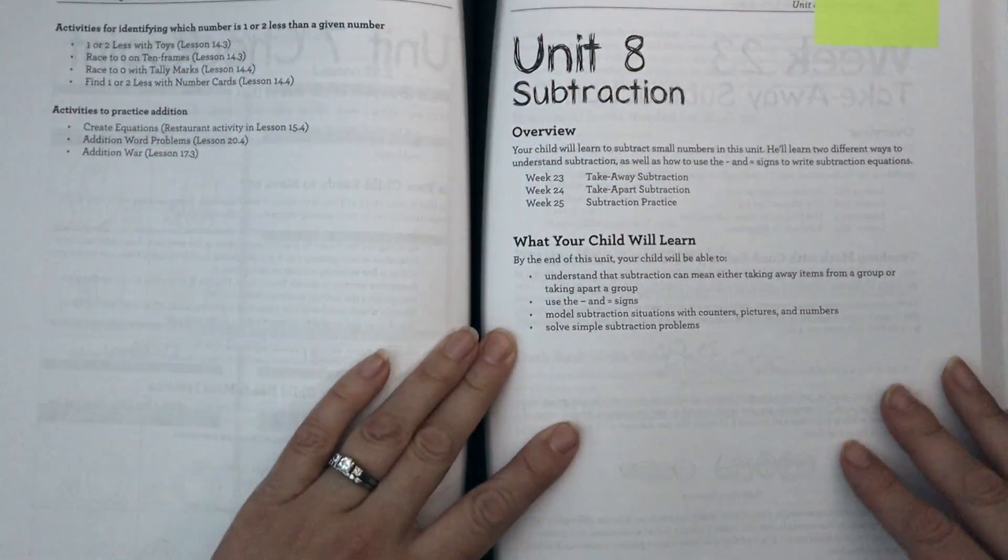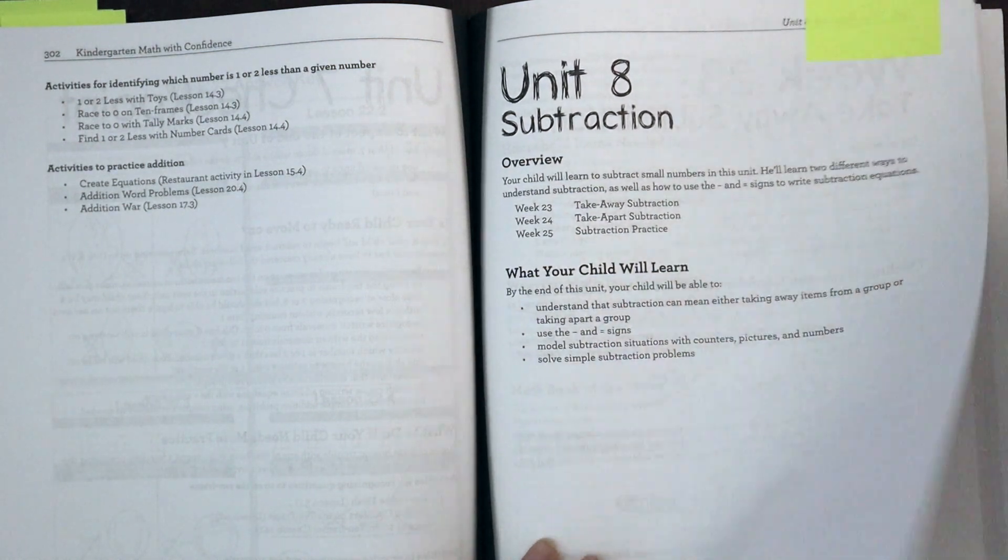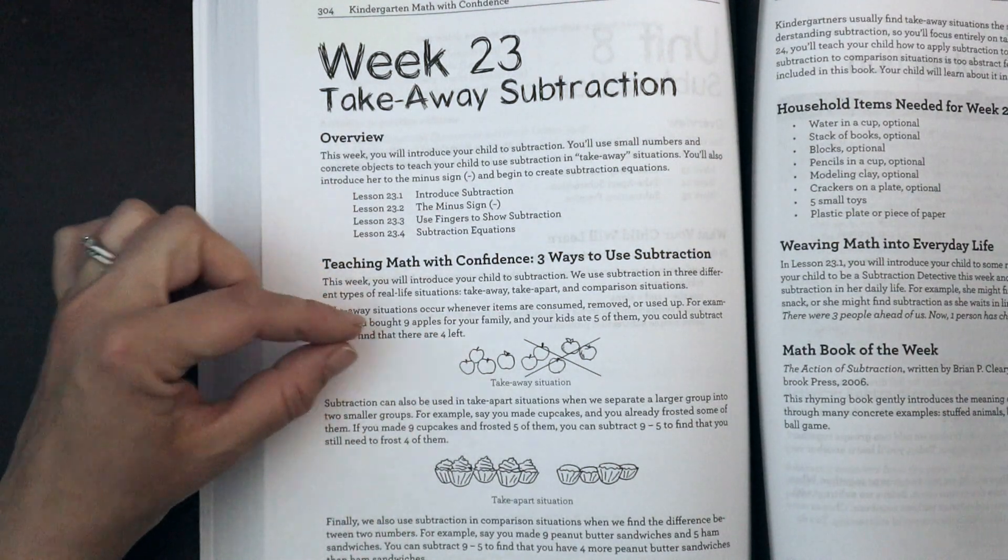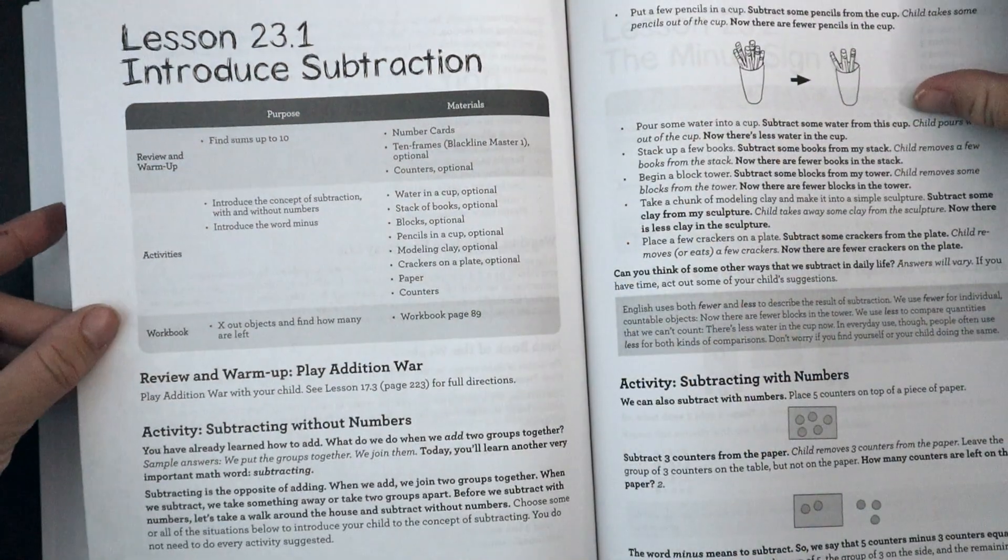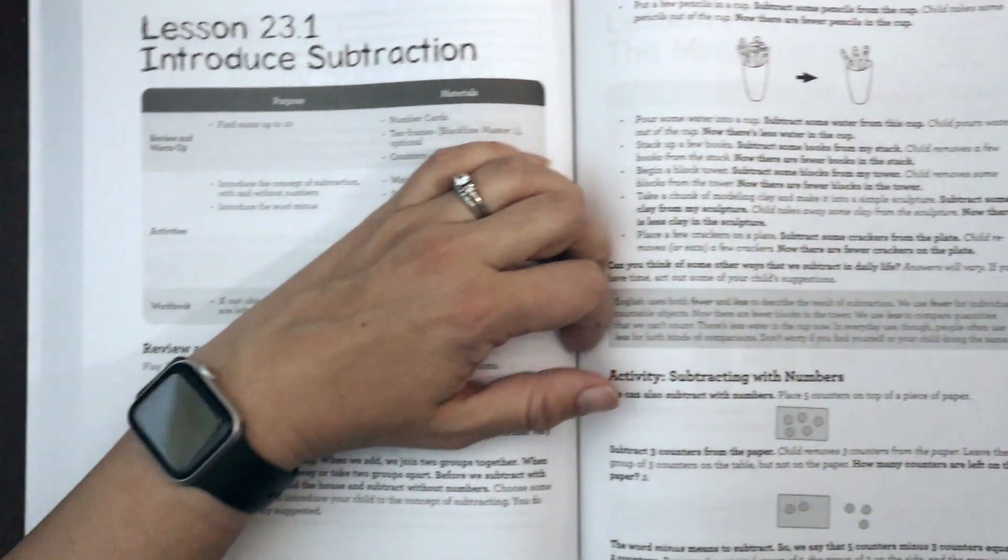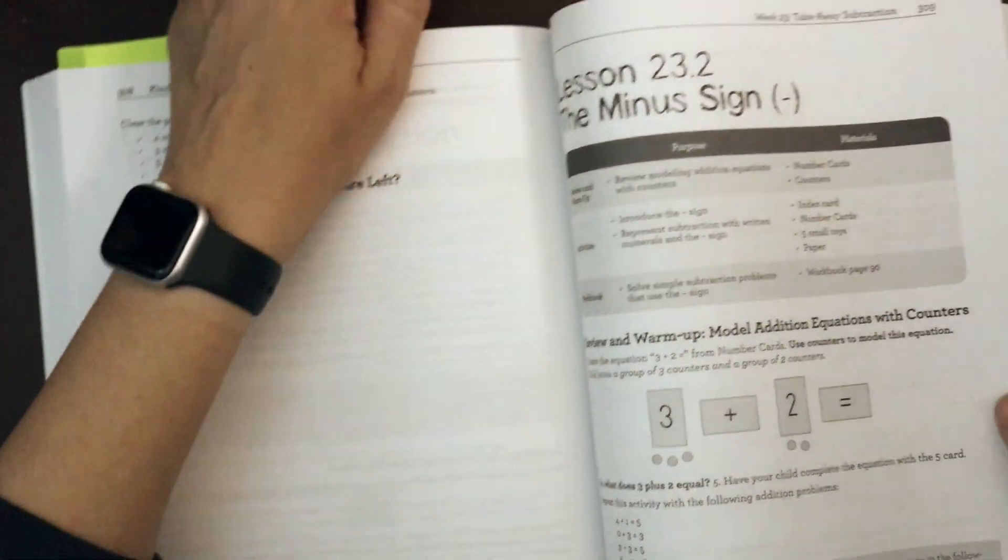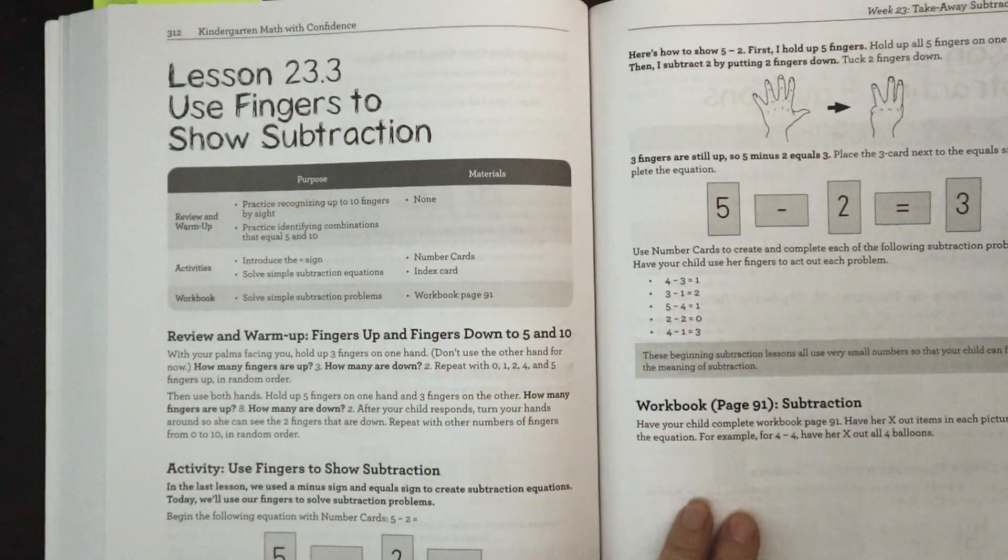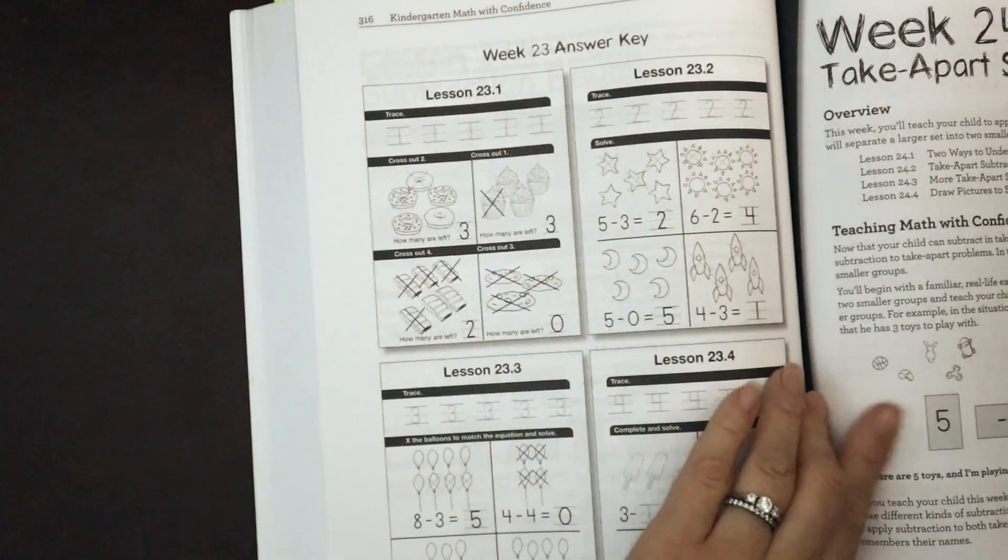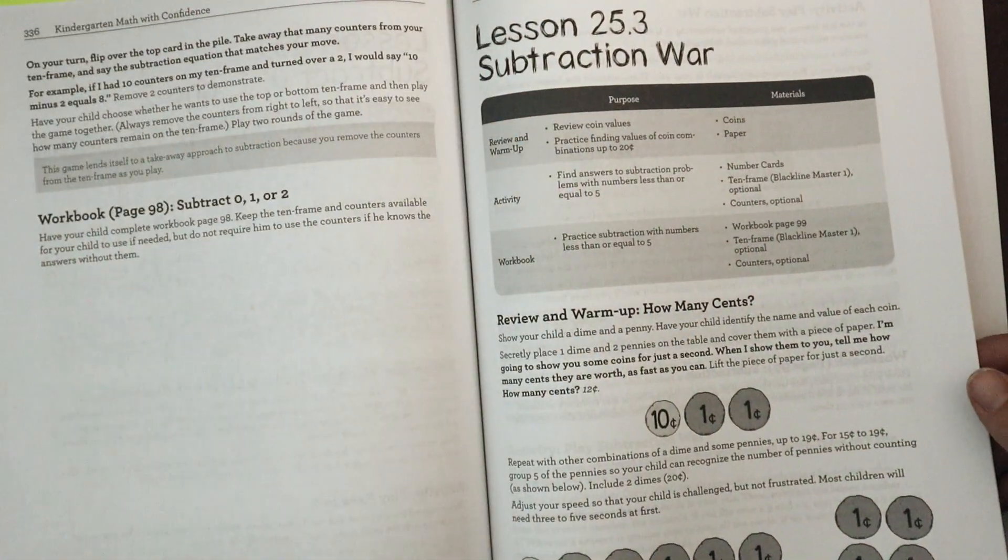Let's look at a unit towards the end. This is unit eight on subtraction. It goes over the overview: takeaway, subtraction, take apart, subtraction and subtraction practice. What your child will learn. The background behind it and why you're teaching it this way. Three ways to use subtraction. It talks about the takeaway, the take apart and the comparison model. Introduces subtraction. You have a review and warm up playing addition war. You have your activity using hands-on concrete items. You have your workbook pages. Adding in information now about the minus sign. Still using a lot of concrete items. Your workbook pages start to bring in the pictorial representation. Different ways to understand subtraction. Using the 10 frame. Subtraction war.